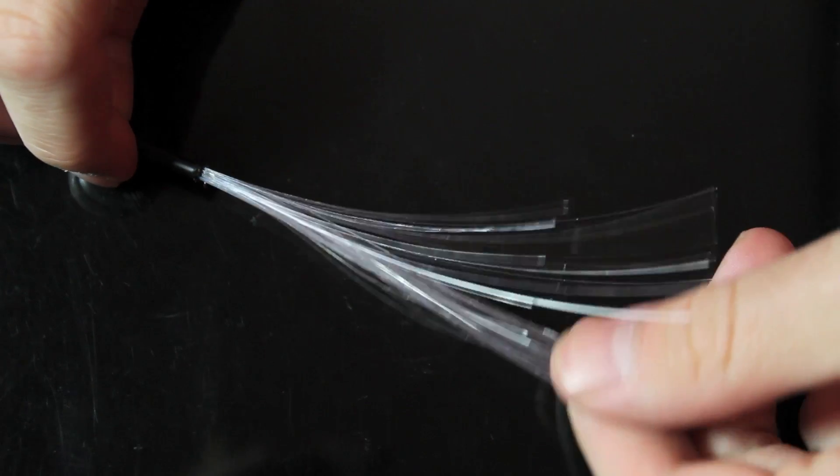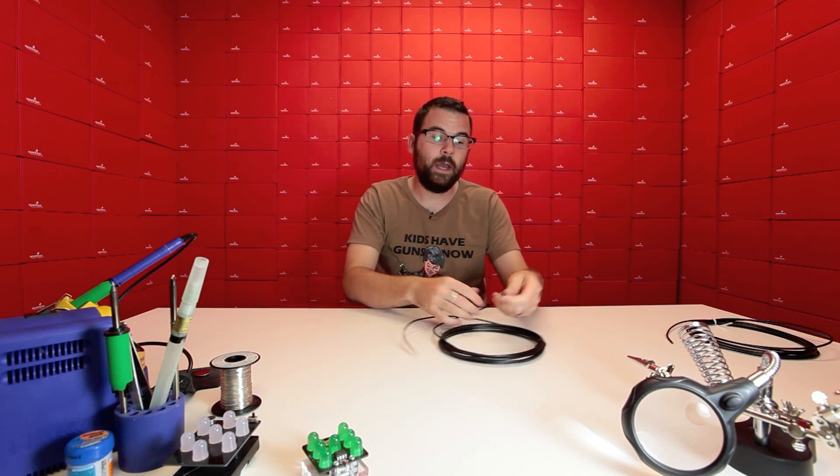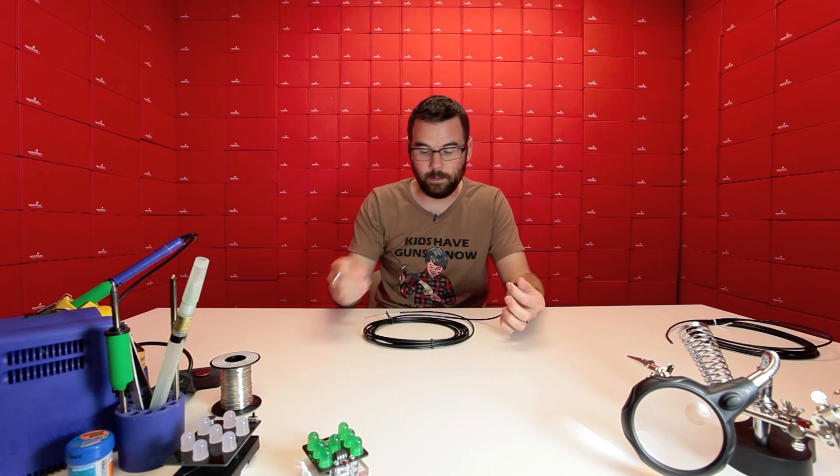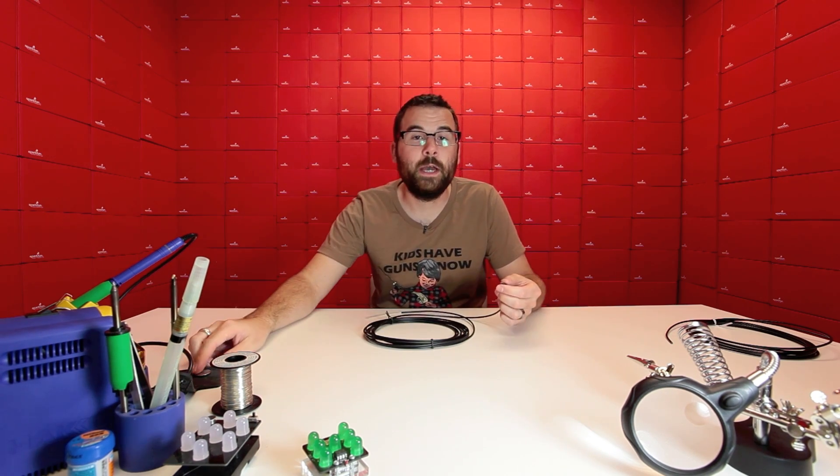So when you cut it, it looks a little something like that and has all these fibers. So we've got an LED shrink wrapped into one end of it and we'll show you what it looks like when we attach a battery.